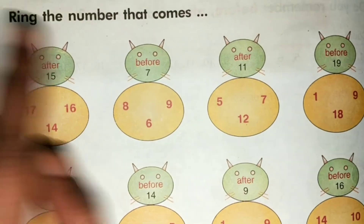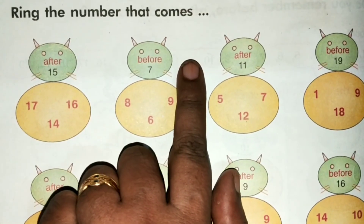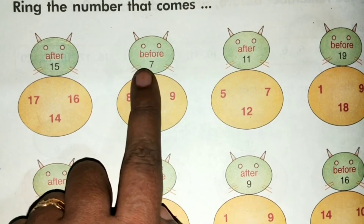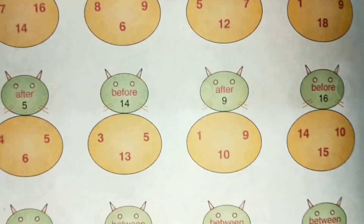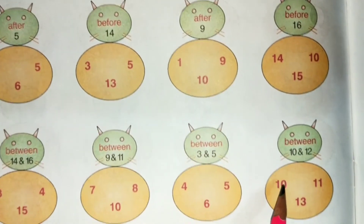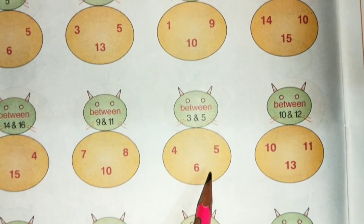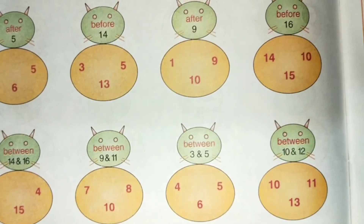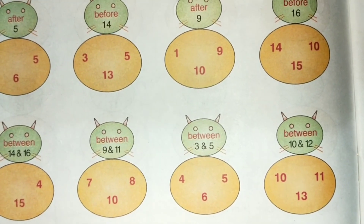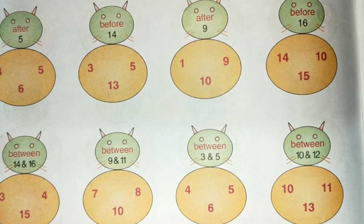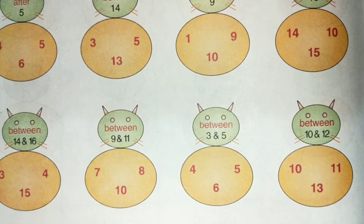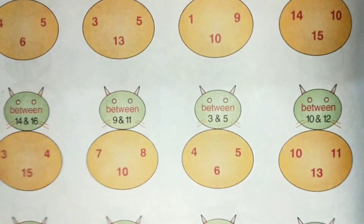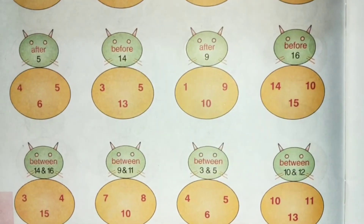Let us turn to the next page — page 34. Ring the number that comes — yahan par bhi after, before diya hua hai yeh do line mein, aur yahan between diya hua hai. Toh aap log yeh poora banaiyega. Thank you.